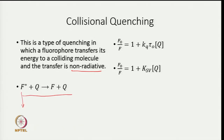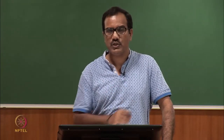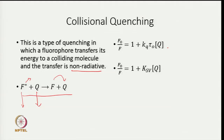Here F is your fluorophore, Q is your quencher, and the star tells you that the particular compound is in excited state. So F* means fluorophore is in excited state. The quencher reacts with fluorophore in its excited state and there is a transfer of energy from fluorophore to quencher. I discussed the kinetic equation which holds true in presence of quencher and when we solve it, we get this equation which is known as the Stern-Volmer equation.